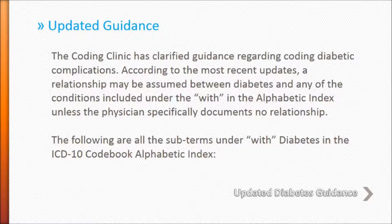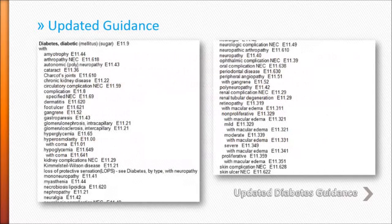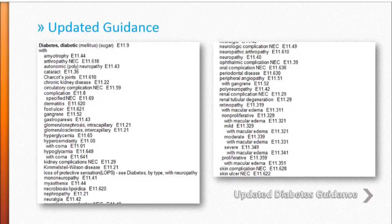The following are all of the subterms under WITH diabetes in the ICD-10 Codebook Alphabetic Index. You can also download this full list on the PPS Plus website under our coding blog post.